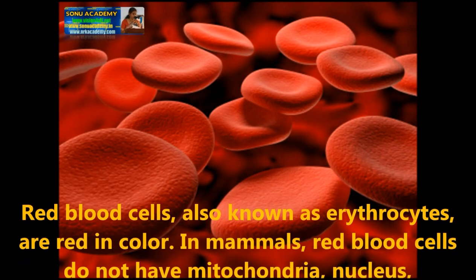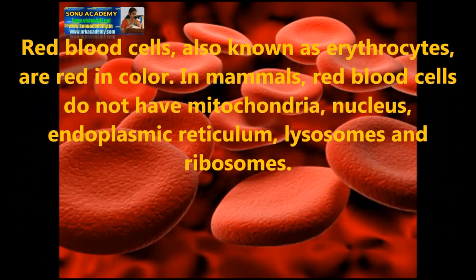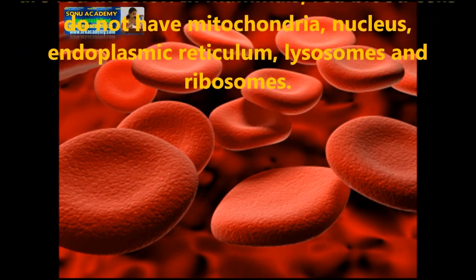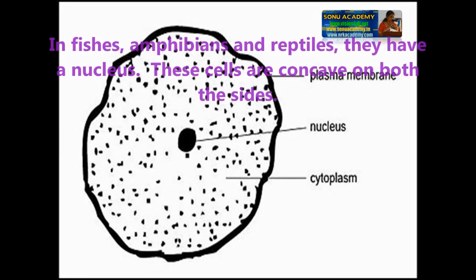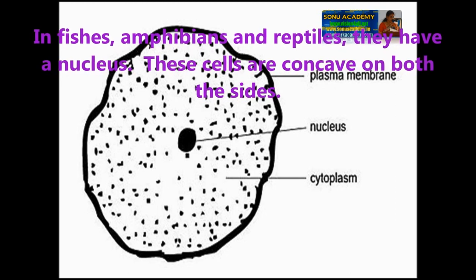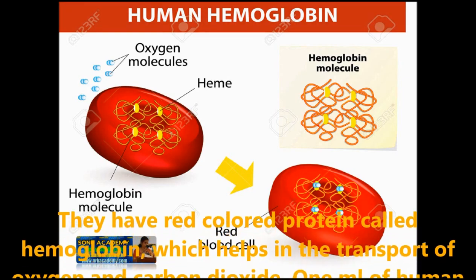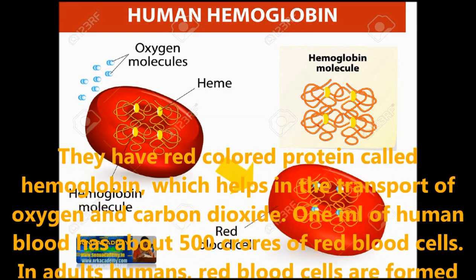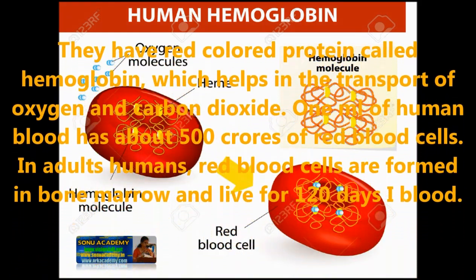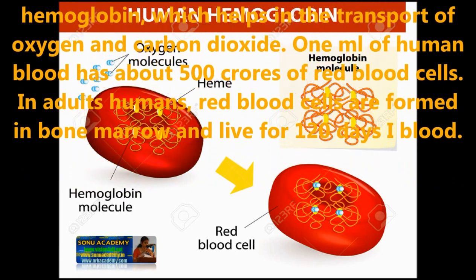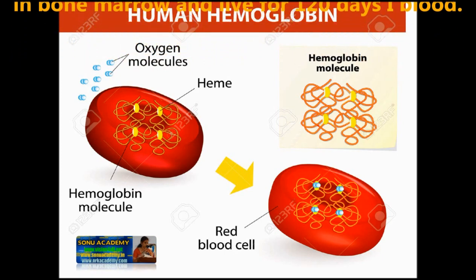Red blood cells are known as erythrocytes and are red in color. In mammals, red blood cells do not have mitochondria, nucleus, endoplasmic reticulum, lysosomes and ribosomes. In fishes, amphibians and reptiles, they have a nucleus. These cells are concave on both sides and have a red colored protein called hemoglobin, which helps in the transport of oxygen and carbon dioxide. One milliliter of human blood has about 5 million red blood cells. In human adults, red blood cells are formed in bone marrow and live for 120 days in blood.